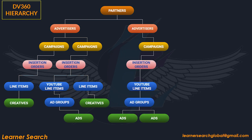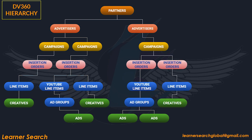Under this partner, a new advertiser is created having one campaign, IO, and a YouTube line item with one ad group and two creatives for this ad group. For the same campaign, a new IO is created having one line item and creative.